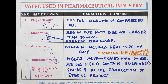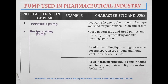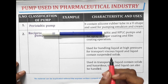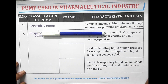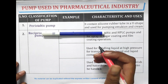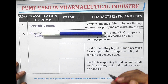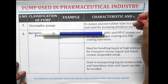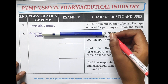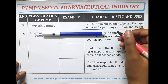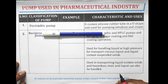Now let's discuss the pumps used in pharmaceutical industries. A pump is a mechanical device used to increase the pressure energy of a liquid — it increases the level of fluids from a lower energy level to a higher energy level. A large variety of pumps have been developed with various types of operating functions.